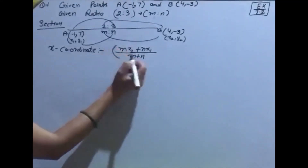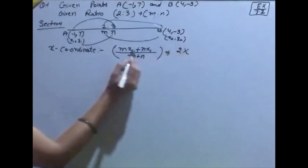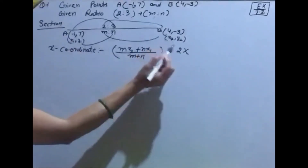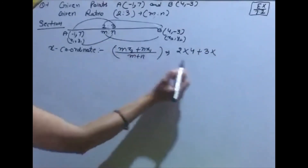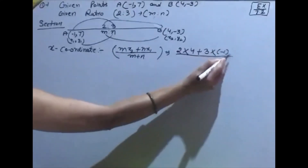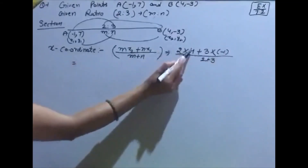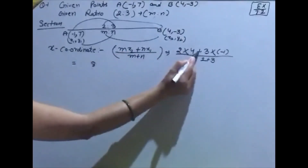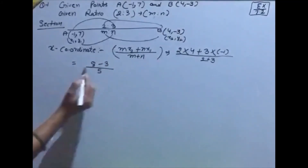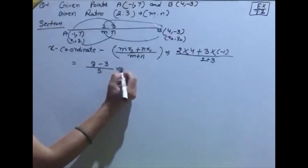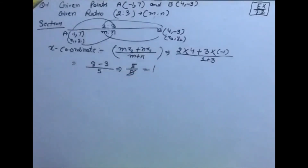Formula में values put करते हैं: m = 2, x₂ = 4, n = 3, x₁ = -1, divided by m + n = 2 + 3 = 5। यह होगा: (2×4 + 3×(-1)) / 5 = (8 - 3) / 5 = 5/5 = 1। तो x-coordinate आया हमारे पास 1।